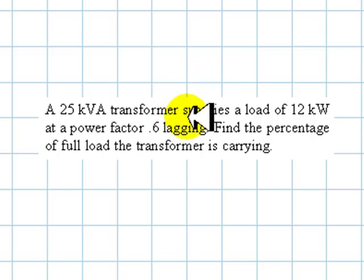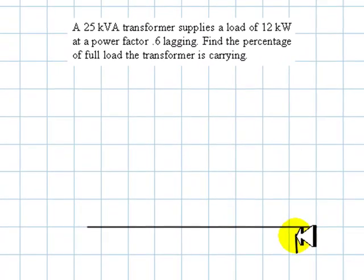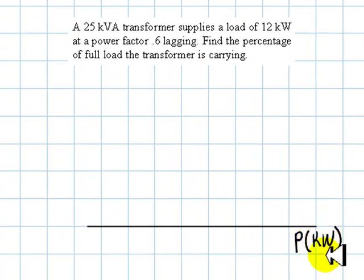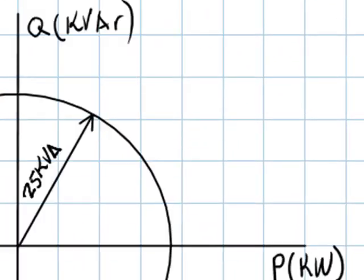Let's make a drawing on the complex plane of power, the one that has a real axis P in kilowatts, active power, and an imaginary axis Q, reactive power, in kilovolt-amperes reactive. What that means is that as long as the load of the transformer is within this circle of radius 25 kVA, the transformer is safe.